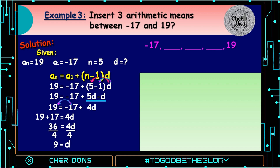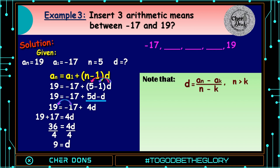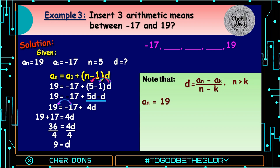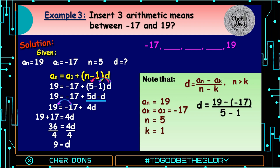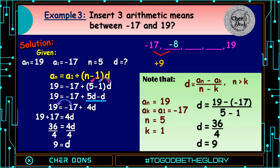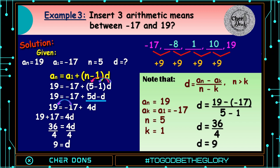The easiest way to find the common difference is by using the difference formula: d equals a sub n minus a sub k, all over n minus k, where n should be greater than k. By substitution, a sub n is 19, a sub k is a sub 1 which is negative 17, n is 5, k is 1. So d equals 19 minus negative 17, all over 5 minus 1, which equals 36 over 4. d equals 9 — the same answer. To get the next term, add 9 to the previous term: negative 17 plus 9 is negative 8, negative 8 plus 9 is 1, 1 plus 9 is 10, 10 plus 9 is 19. Therefore, the three arithmetic means between negative 17 and 19 are negative 8, 1, and 10.